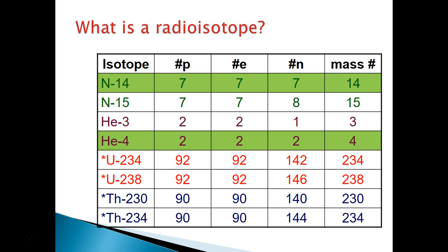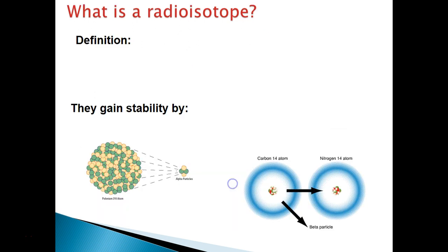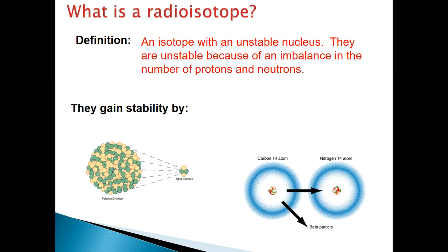So what is a radioisotope? Here we have our table of protons, electrons, and neutrons and mass number. I have two stable isotopes — nitrogen-14 and helium-4 — and a whole bunch of unstable isotopes. Looking at the stable isotopes, I see equal numbers of protons and neutrons. The unstable isotopes have a different number of protons and neutrons. A radioisotope is an isotope with an unstable nucleus.